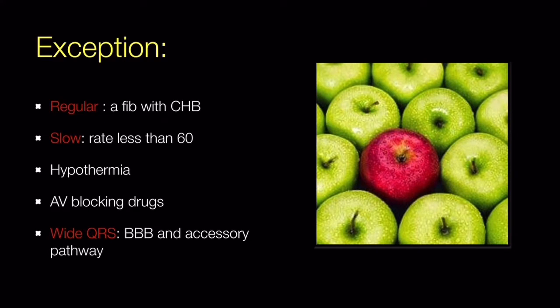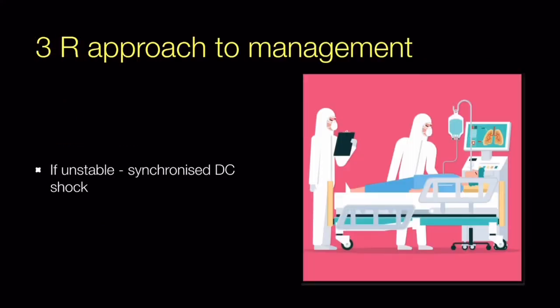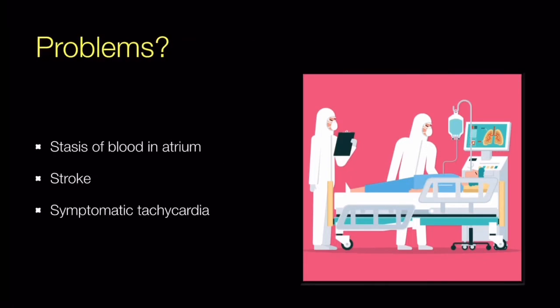Coming to management of atrial fibrillation: as with any arrhythmia, if it is associated with hemodynamic instability, we have to cardiovert using DC shock. The main problems with AF are: when the atrium fibrillates, it leads to ineffective atrial contraction, causing stasis of blood, thrombus formation, and embolic stroke; and the second problem is symptomatic tachycardia.